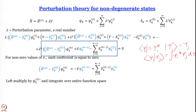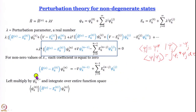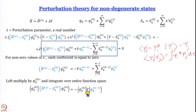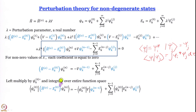Left-multiplying by psi_k^(0) and integrating over all space, the left-hand side becomes ⟨psi_k^(0)| H-hat-zero minus E_k^(0) |psi_k^(n)⟩. The right-hand side gives minus the integral of psi_k^(0)* V psi_k^(n-1) over all space, plus the summation from j=0 to n-1 of E_k^(n-j) times the integral of psi_k^(0)* psi_k^(j) d-tau.